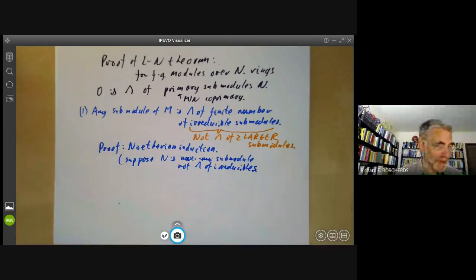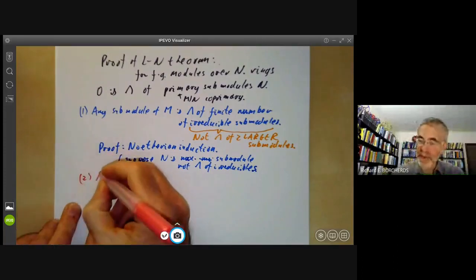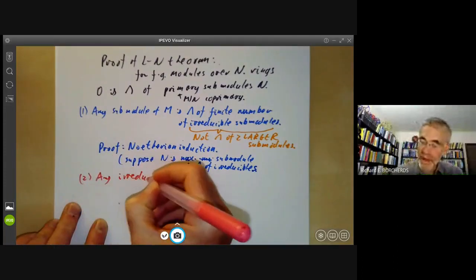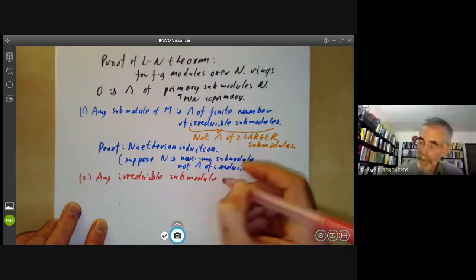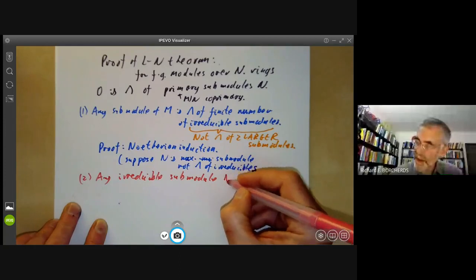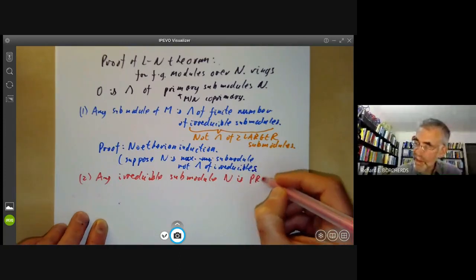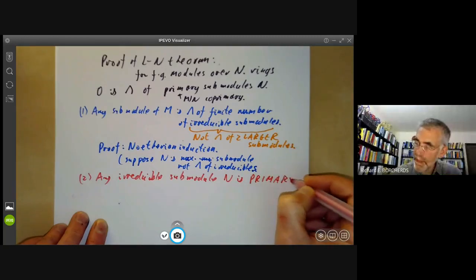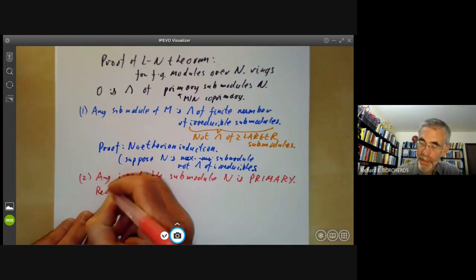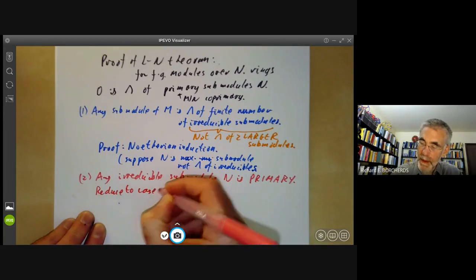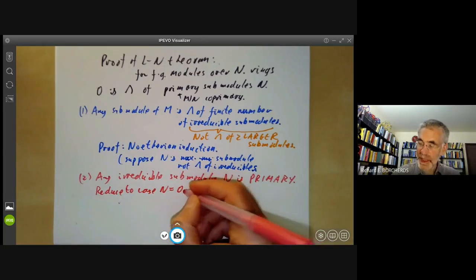Step two takes a little bit more effort. It says any irreducible submodule n is primary. To prove this, we can reduce to the case n is zero, just by quotienting out by n.